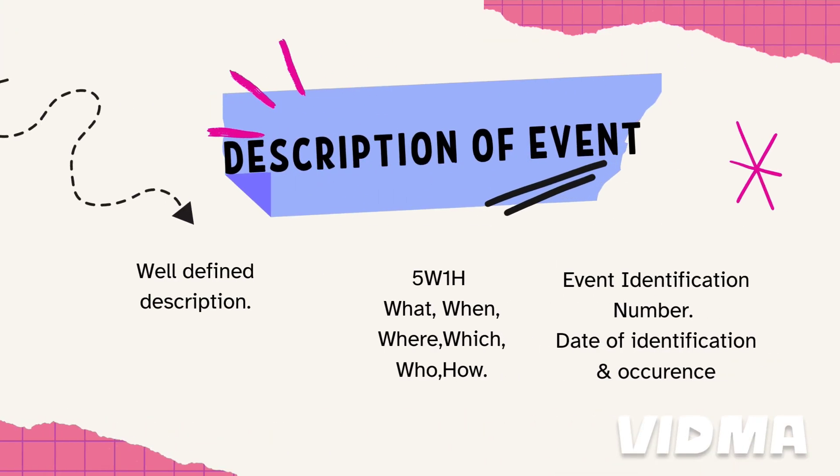First is the description of event. Use the 5W1H method to explain the event description: what happened, when it happened, where it happened, which was impacted, who identified it, and how it was identified. This technique provides a comprehensive event description. Don't forget to include the event identification number as per your procedure.